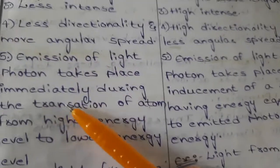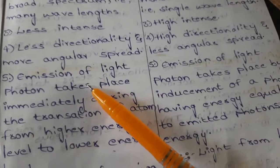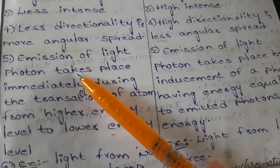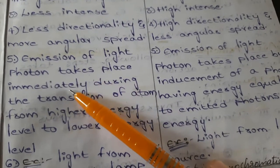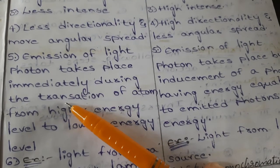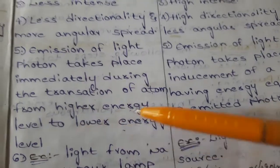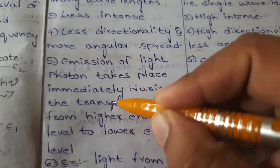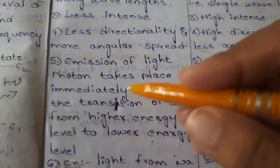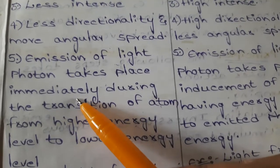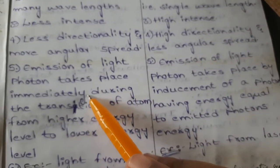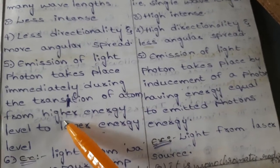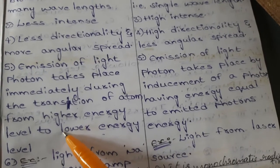The fifth point: in spontaneous emission, the emission of a light photon takes place immediately during the transition of the atom from a higher energy level to a lower energy level.